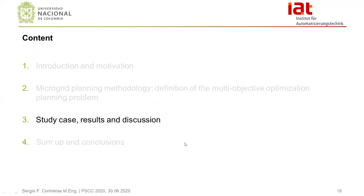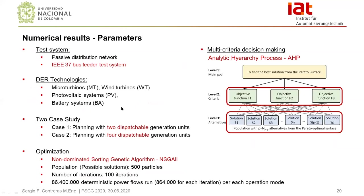Now let's see some results for the planning of a network microgrid. The new methodology is used for loop-based topology planning of a network microgrid on the medium voltage IEEE 37-bus test feeder. Four different technologies are used: microturbines, wind turbines, photovoltaic systems, and battery systems. Two case studies are defined: case study one is the planning of the network microgrid with two dispatchable distributed generation units; case study two is planning with four dispatchable distributed generation units. In both cases, results are compared with outcomes of loop-based and radial-based planning using the former methodology POM, where the topology is not planned but predefined. The optimization problem is solved with the well-known NSGA-II algorithm for 500 particles and 100 iterations, and a final solution is chosen based on the Analytic Hierarchical Process.